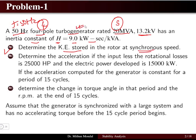We also need to determine the acceleration if the input power less rotational losses is 25,000 horsepower, with electrical power developing at 15,000 kilowatts.